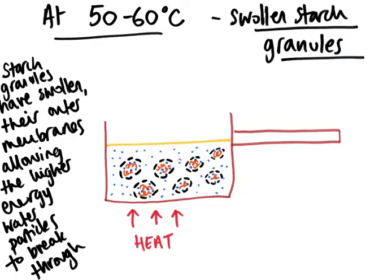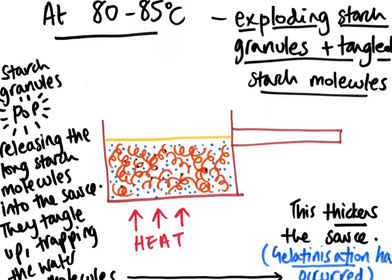As we continue to heat the sauce, the next stage happens around 80 to 85 degrees C. The starch granules start to pop. As you can see in the visual representation, there are no more starch granules — they have dissolved and exploded, releasing all of the starch molecules into the sauce. They're represented by these orange coils. They've all tangled up because they're very long and have trapped the water particles in between. This is when the sauce thickening happens — we would say at this stage, gelatinisation is occurring.